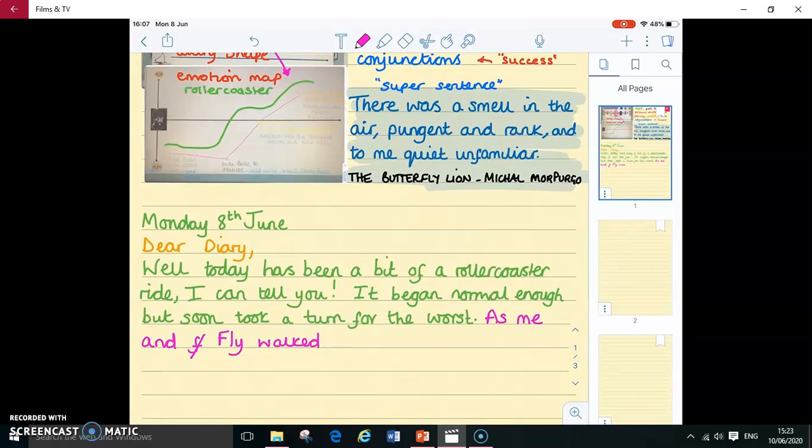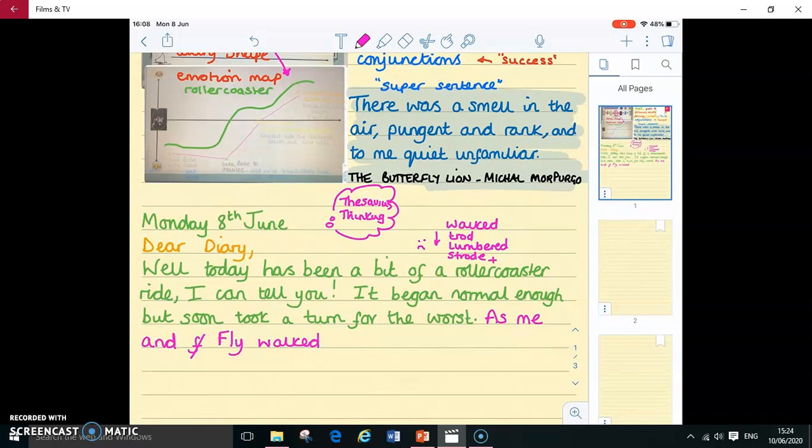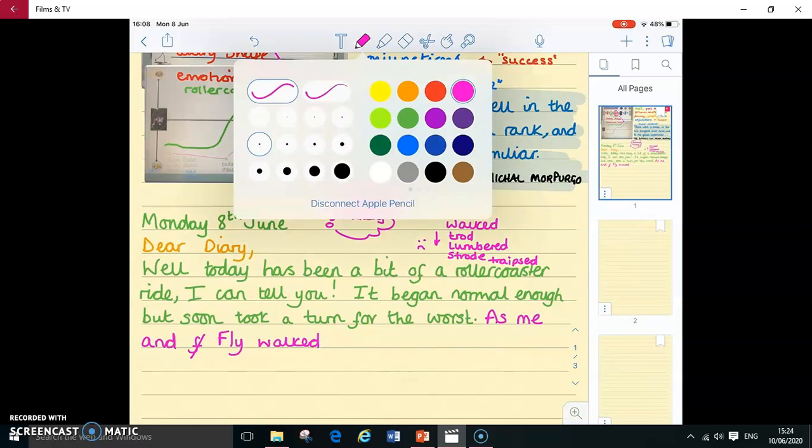And the first thing that I have to do as Farmer Hoggett is I have to get to the field. So I'm going to say that first. So as me and fly, now I made a little mistake there because fly is the name of the sheepdog. It's the name of the collie. So I've had to change it for a capital letter. Now I like the word walked, but it's a little bit basic. We are in year four now. So I think we're going to do some thesaurus thinking around the word walked. Can we think of some synonyms, some better words that mean the same as walked? And can we choose one of those in our diary entry? Now I'm thinking about walking in a negative context. So I might lumber along slowly, strode, trod, traipsed. It's all such hard work, isn't it?